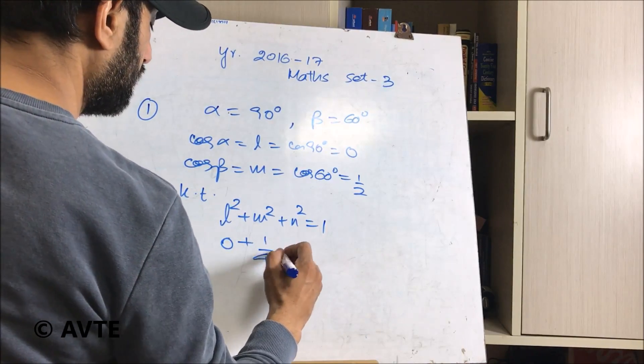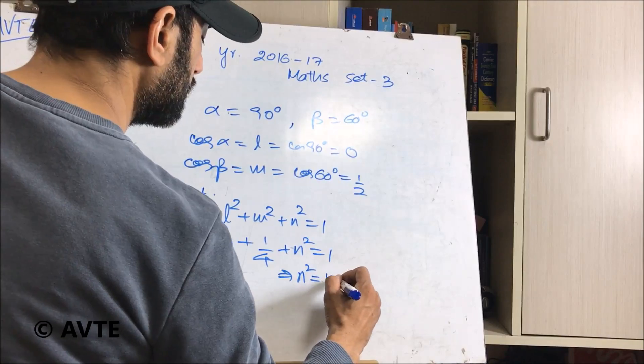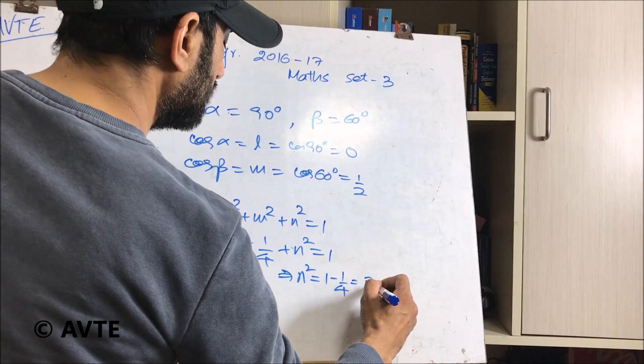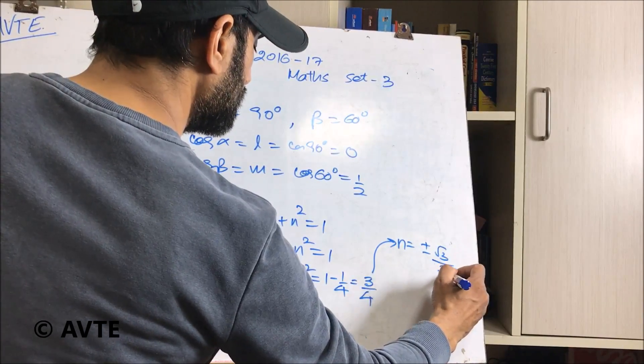Therefore 0 plus 1 by 4 plus N square is equal to 1. This implies N square is equal to 1 minus 1 by 4, 3 by 4. N is equal to plus minus root 3 by 2.